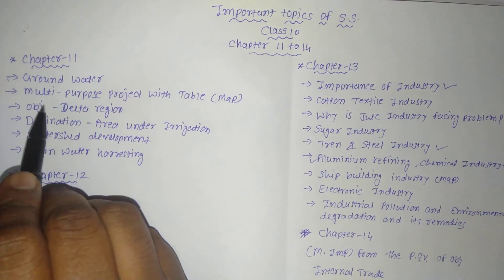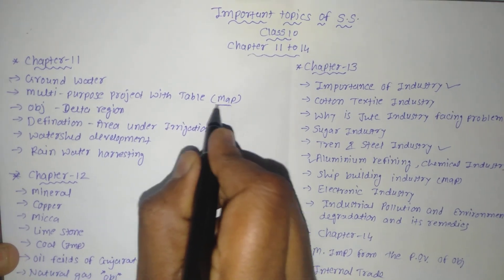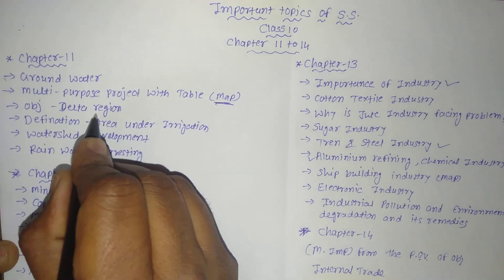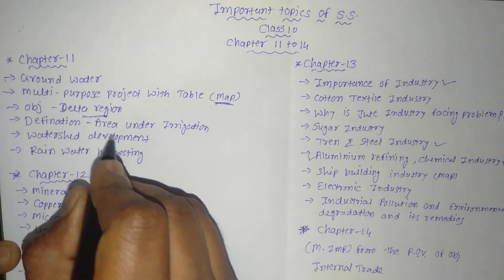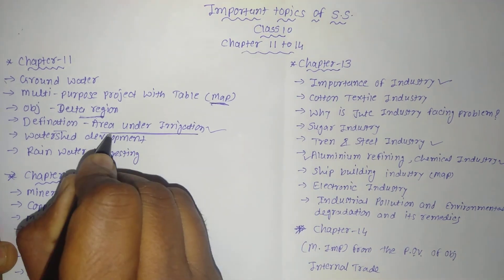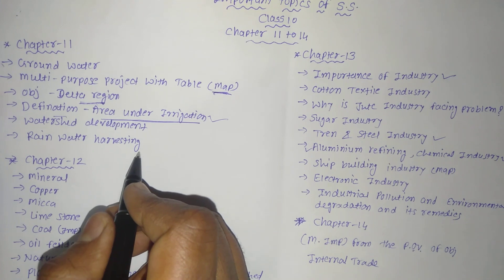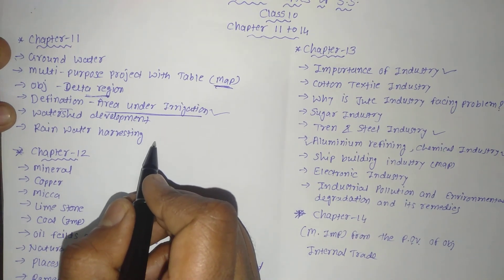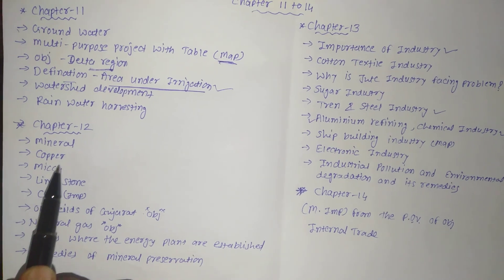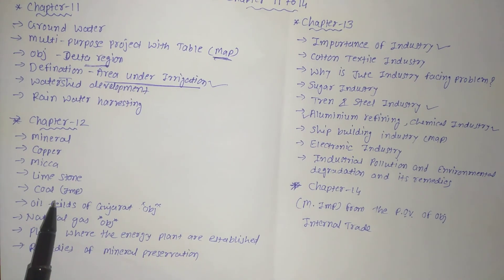The important topics of Chapter 11 are: groundwater, multi-purpose projects with table (which is important for the map), objective, delta region — this question can be asked in objective or definition form — area under irrigation, watershed development, and rainwater harvesting. This can be asked in objective also and it is also an important question.